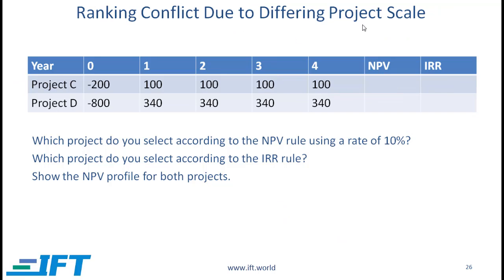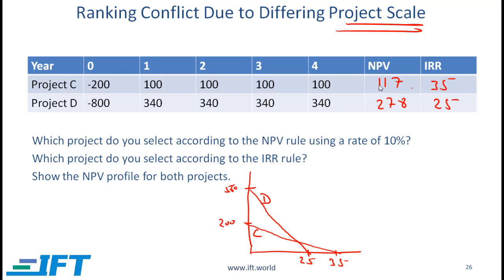Ranking conflict due to differing project scale. Now we are looking at projects C and D. Notice that project D is four times bigger than project C. Come up with the NPV and IRR numbers for both projects and the NPV profile. Notice again that there is a conflict between the NPV and IRR decision rules: NPV says go with project D, IRR says go with project C. When there is a conflict, you go with the NPV rule.